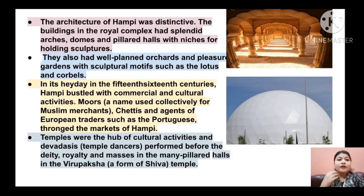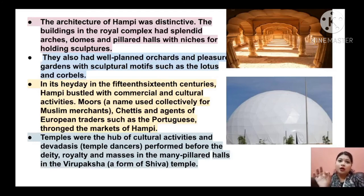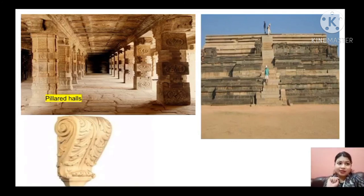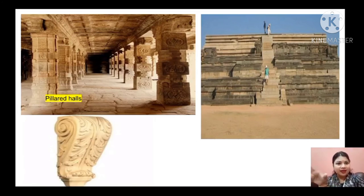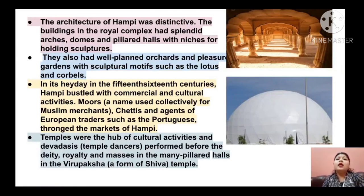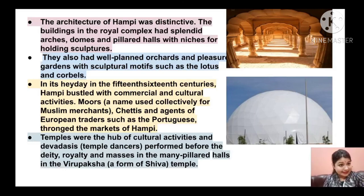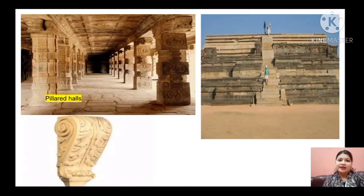The second picture is of domes. You can now identify how arches look and how domes look. There were arches, domes, and also pillared halls. The first picture on this screen is the pillared halls — I have also labeled it so you will understand in a better way. So the architecture of Hampi was distinctive and the buildings in the royal complex consist of arches, domes, and pillared halls.